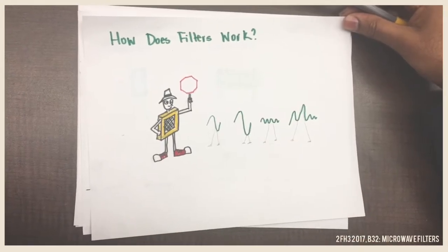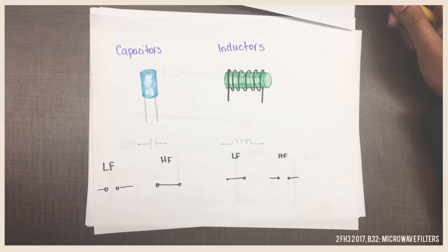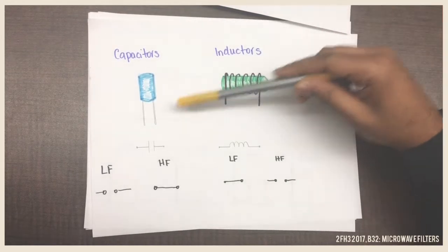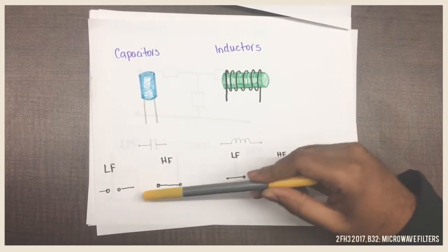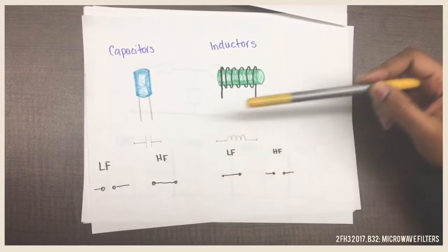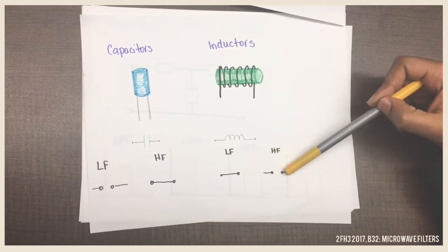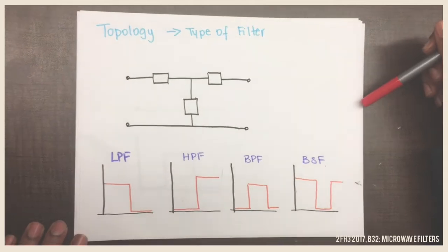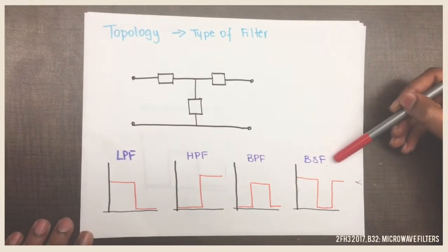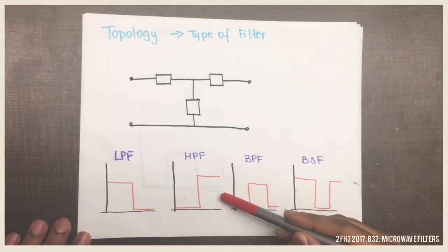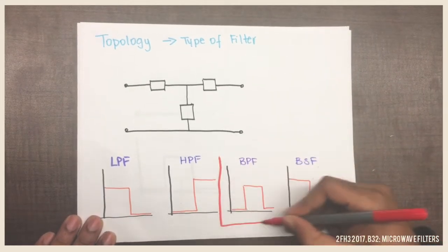Filters are designed with components that operate differently based on frequencies, such as capacitors and inductors. For example, capacitors behave as an open circuit at low frequencies and as a closed circuit at high frequencies. Based on how the components are arranged, we can design four different types of filters: a low-pass filter, high-pass filter, band-pass filter, and band-stop filter. Microwave filters are usually band-pass filters.